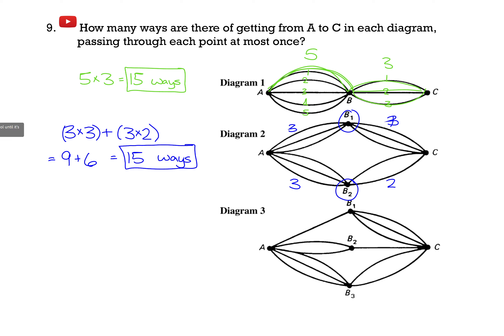Now for diagram 3, same idea. To go from A to B1, there's only one way. To go from A to B2, there are two ways. To go from A to B3, there are three ways. Now, from B1 to C, we have three ways. From B2 to C, there's only one way. And from B3 to C, we have two ways.